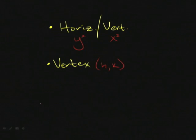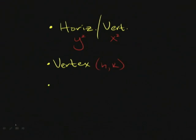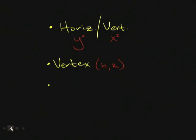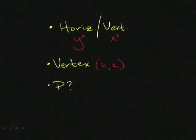And then finally, the last one we're looking at is P. What is P? P is just the distance from the vertex to the focus, but I'll make this caveat that this distance will provide some directionality to it.